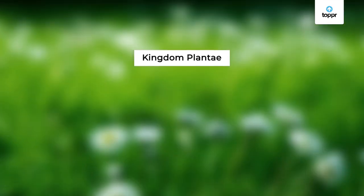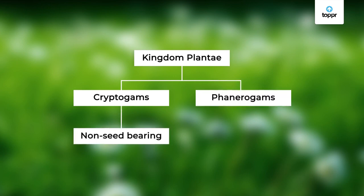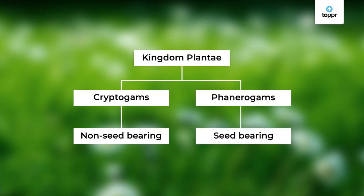Based on the ability to bear seeds, the kingdom plant is subdivided into two sub-kingdoms: cryptogams and phanerogams. Cryptogams include those plants which do not produce seeds, and phanerogams include seed-bearing plants.